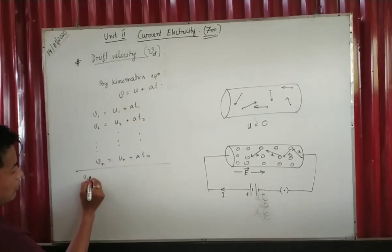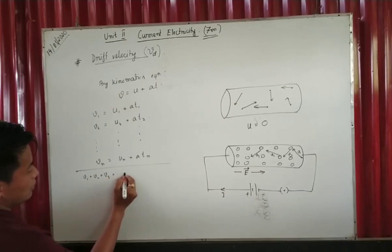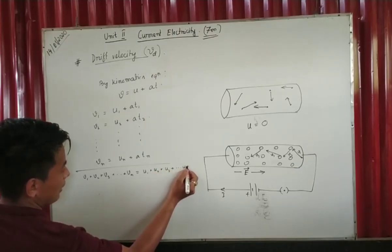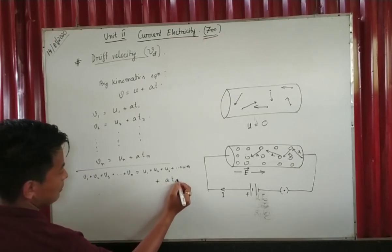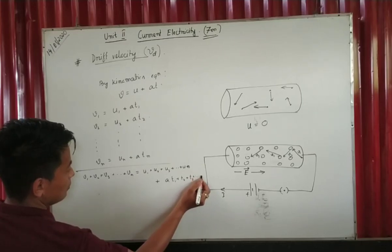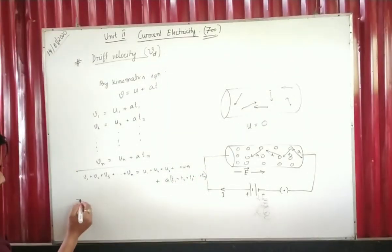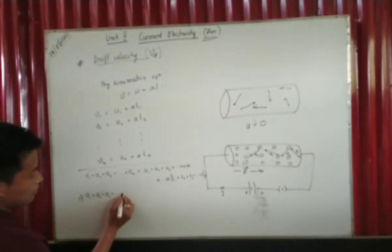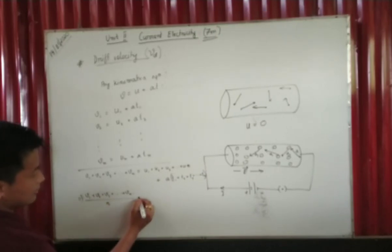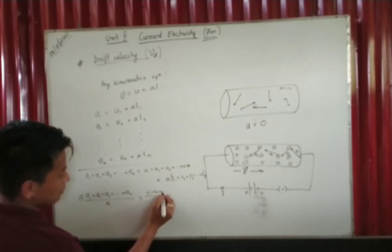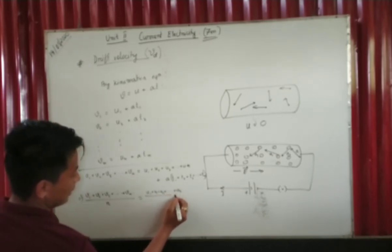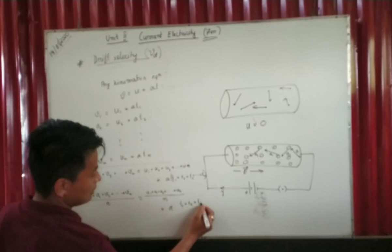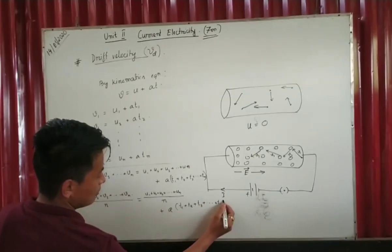On the left side: v1 + v2 + v3 up to vn. On the right side: u1 + u2 + u3 up to un, plus a times (t1 + t2 + t3 up to tn). Now dividing both sides by n: (v1 + v2 + ... + vn)/n equals (u1 + u2 + ... + un)/n plus a times (t1 + t2 + ... + tn)/n.